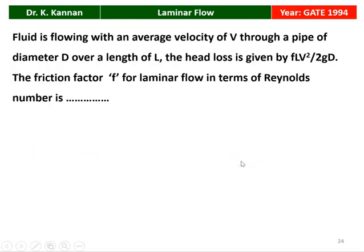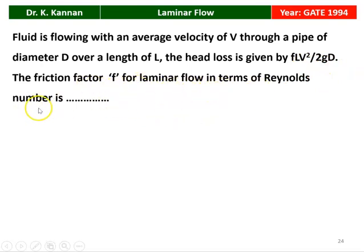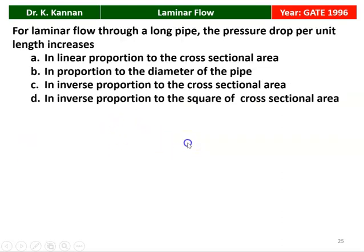Next question from the GATE 1994 question paper. A fluid is flowing with average velocity V through a pipe of diameter D over a length L. The head loss is given by f L V² / (2gD). The friction factor f for laminar flow in terms of Reynolds number: the constant for laminar flow gives friction factor f = 64 / Re. So the answer is 64 / Re.